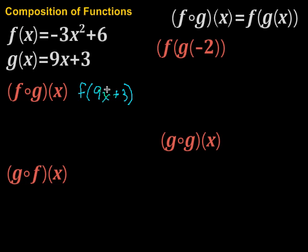So then I'm going to take this 9x plus 3, insert it in here for x. So then I get negative 3 times 9x plus 3 squared plus 6. Now we've got some simplification we can do there.